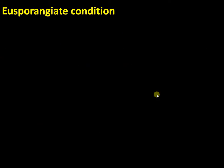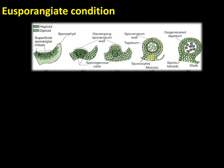Now let us move into the topic of the eusporangiate condition. As shown in the figure, the key aspect is the development of the sporangium. In eusporangiate condition, a number of cells participate in the formation of the sporangium. The resulting sporangium is always a large structure containing numerous spores.